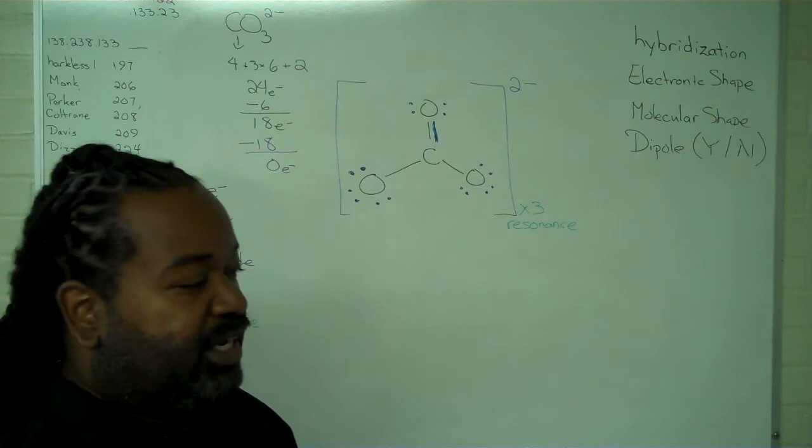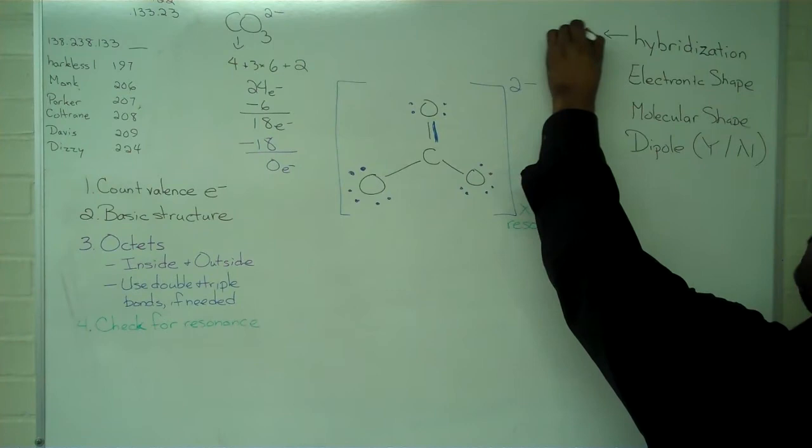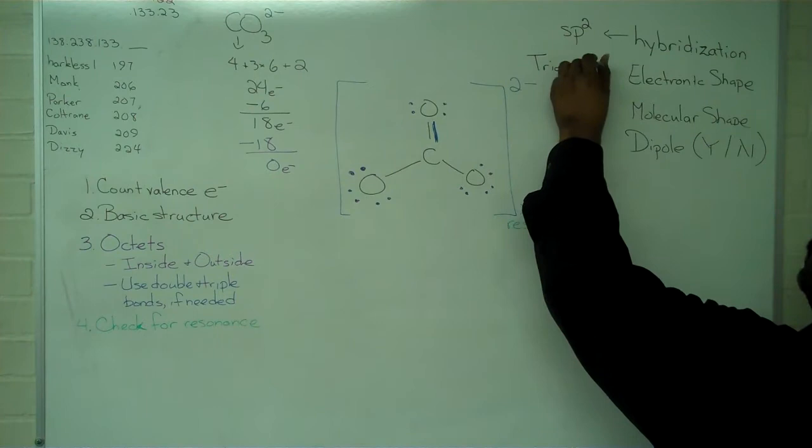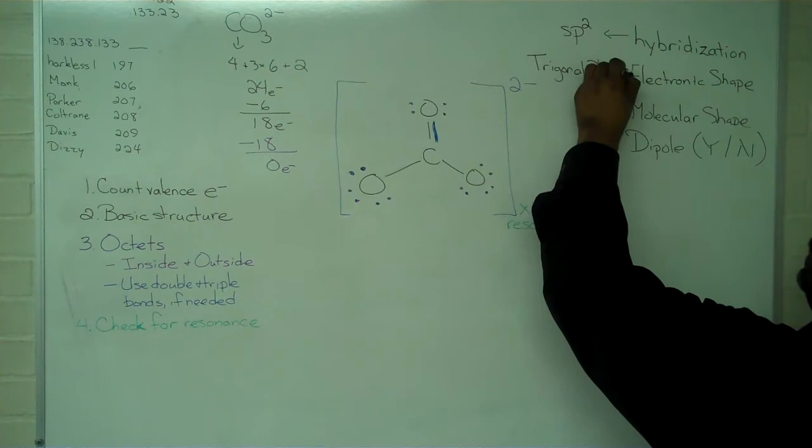So I have 1, 2, 3 groups of electrons around my central atom, and that is consistent with sp2 hybridization. sp2 hybridization has an electronic shape of trigonal planar.